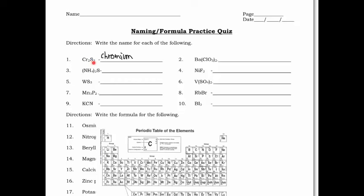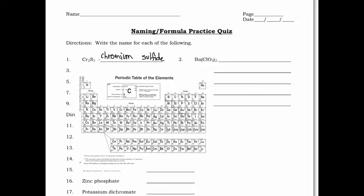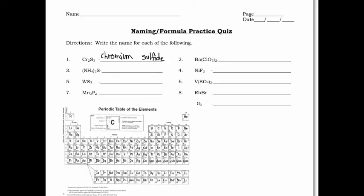After the little space, we name the second one. This one being just a single element versus a polyatomic ion like in number two, we're going to have to change the ending to -ide. So instead of sulfur we're going to call this sulfide. Now we check our periodic table and see if chromium has more than one positive oxidation number, and it sure does. So we're going to have to figure out what that oxidation number is in order to name it, because that's the number that goes in the Roman numeral.